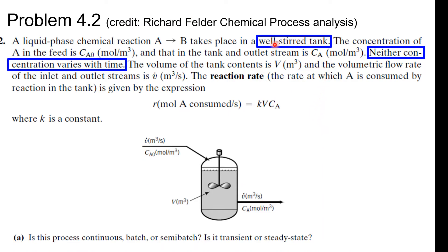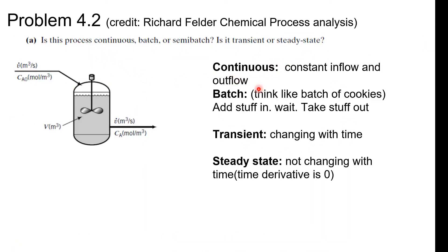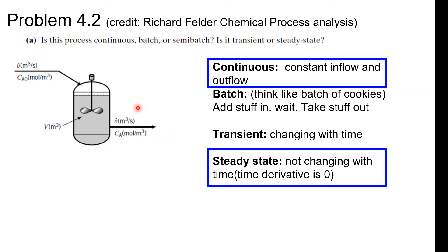A couple little tidbits before continuing. Notice that it's a well-stirred tank, and neither concentration varies with time. This concentration is constant and this concentration is constant. In another class, senior year in process dynamics and control, maybe they're changing with time, which means non-steady state, transient. In this case, we're going to assume it's steady state, and this is definitely a continuous process. The flow is coming in and out, and it's said that neither concentration is changing in time.